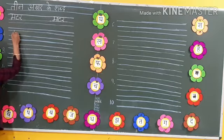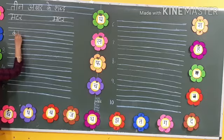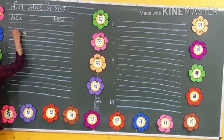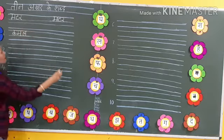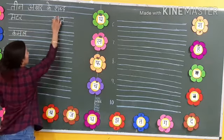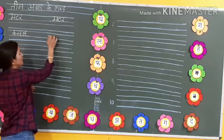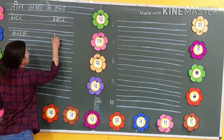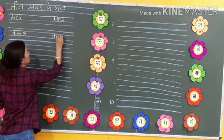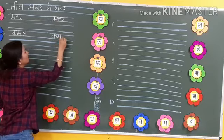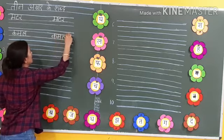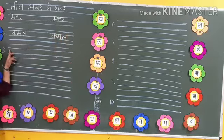Then leave one line and write on number two. Ka-ma-la. Kamal. Again. You have to write the letters down the line. Ka-ma-la. Kamal.